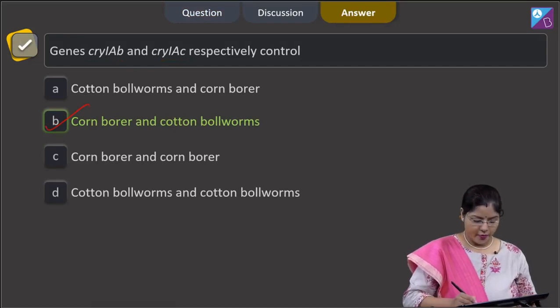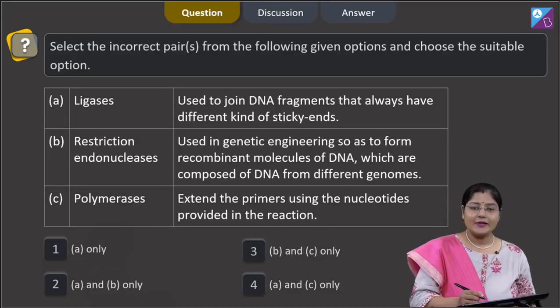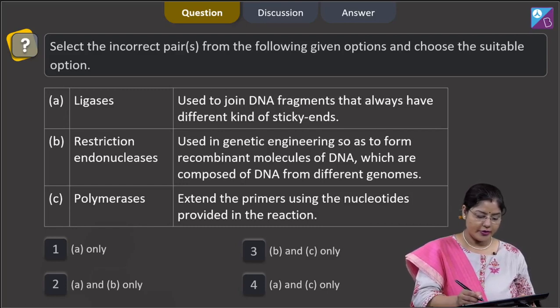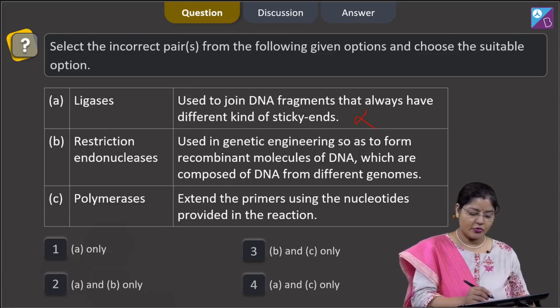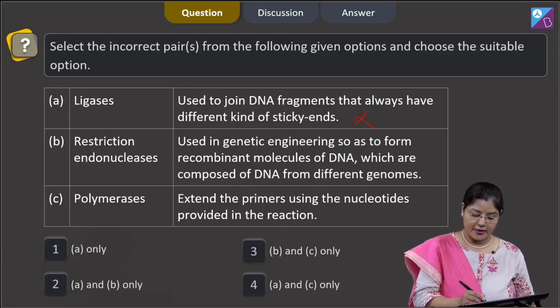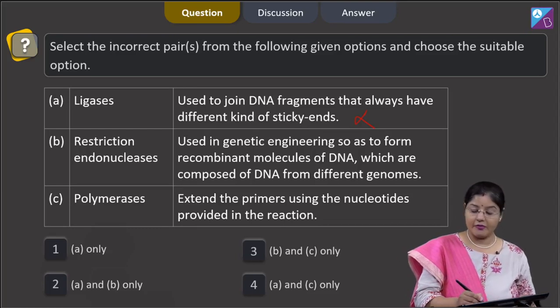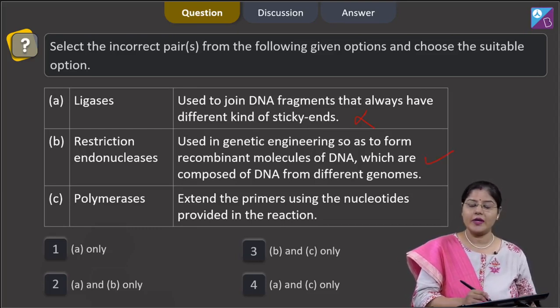Proceeding to the next question. Question states: select the incorrect pairs from the following given options and choose the suitable option. A, ligases used to join DNA fragments that always have different kinds of sticky ends—this is incorrect. B, restriction endonucleases used in genetic engineering so as to form recombinant molecules of DNA which are composed of DNA from different genomes—this is correct. Restriction endonucleases cut the DNA at specific points and they are known as restriction endonucleases or molecular scissors.